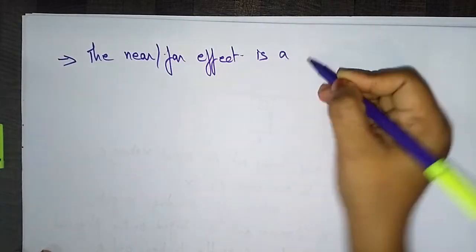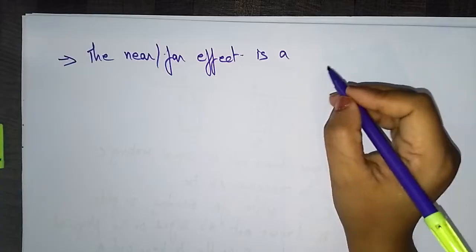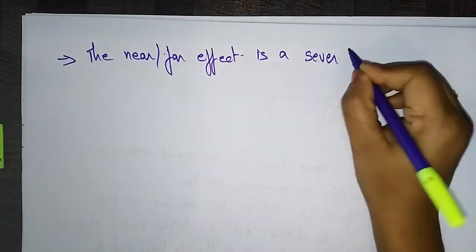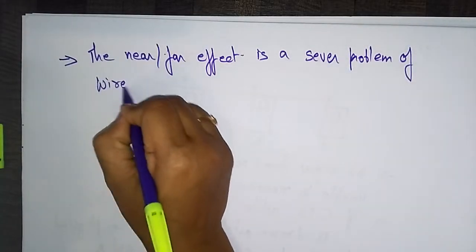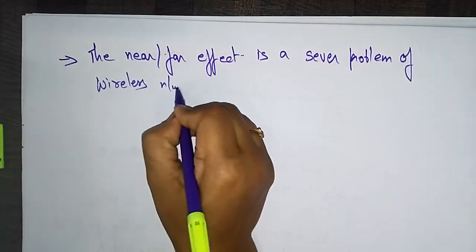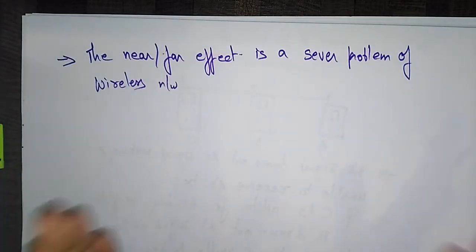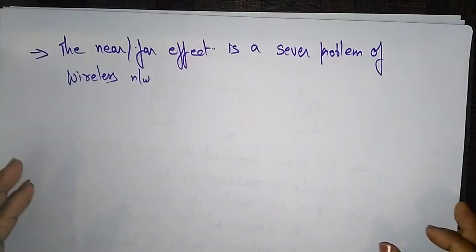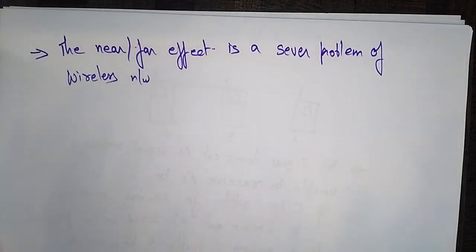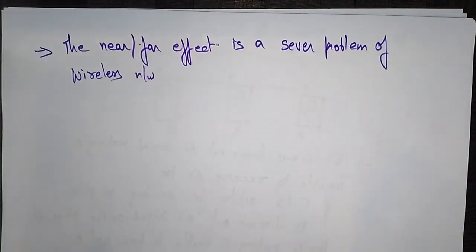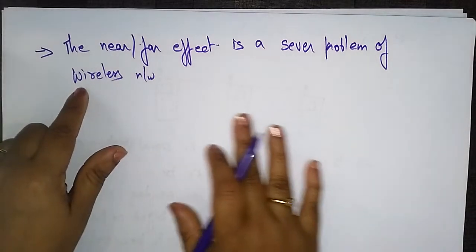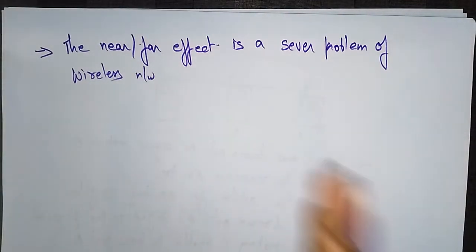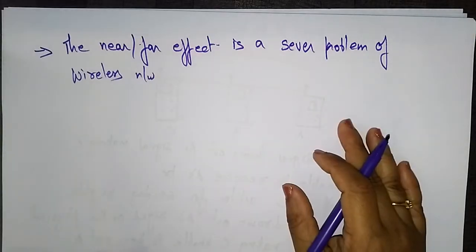The near and far effect is a severe problem in wireless networks. A wants to send data to C, and C is within range, but A is not receiving C's transmissions because B is consuming a lot of transmission power. This is the near and far effect as a severe problem of wireless networks.